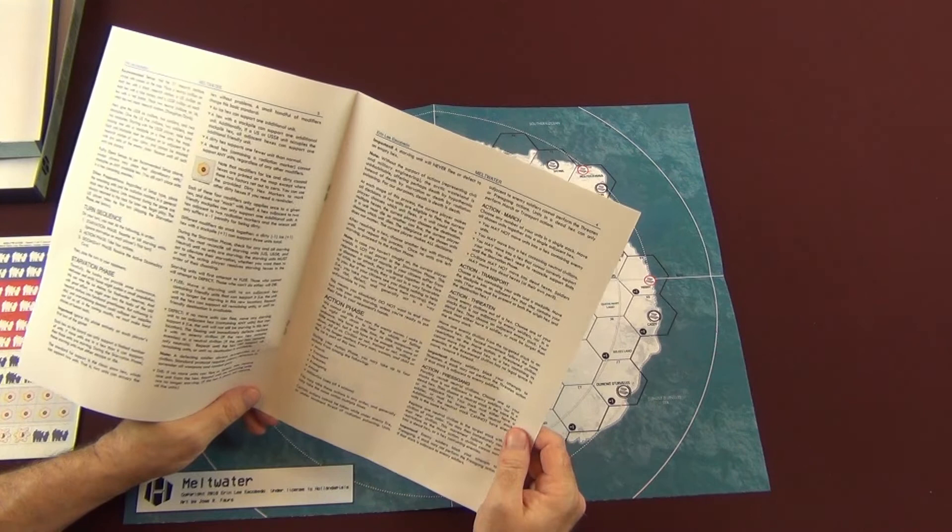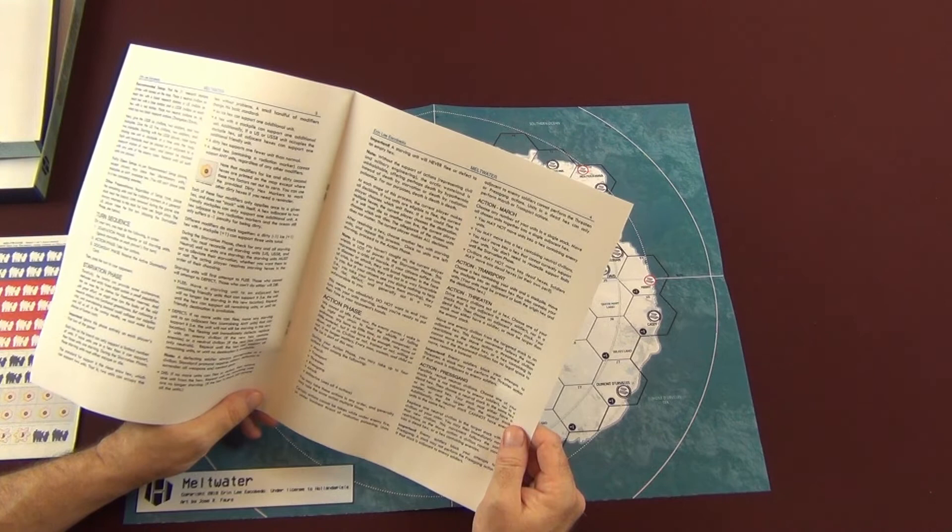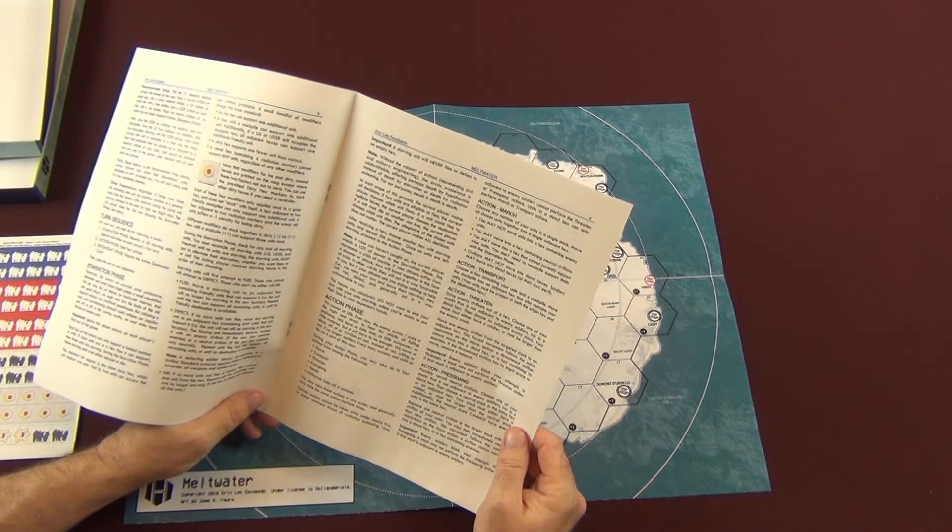Action transport: you can choose a hex containing your units in a stockpile, move the stockpile into an adjacent hex that also contains your units. So you must have units present at both the origin and destination hex.